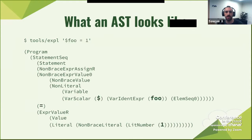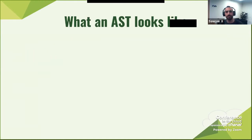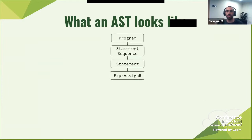I want to point out specifically the dollar sign, the foo, the equals, and the one — these are the actual values you were seeing in the input string without the whitespace. If I were to draw the AST you just saw, because it's actually a tree — an abstract syntax tree — it represents what we wrote.